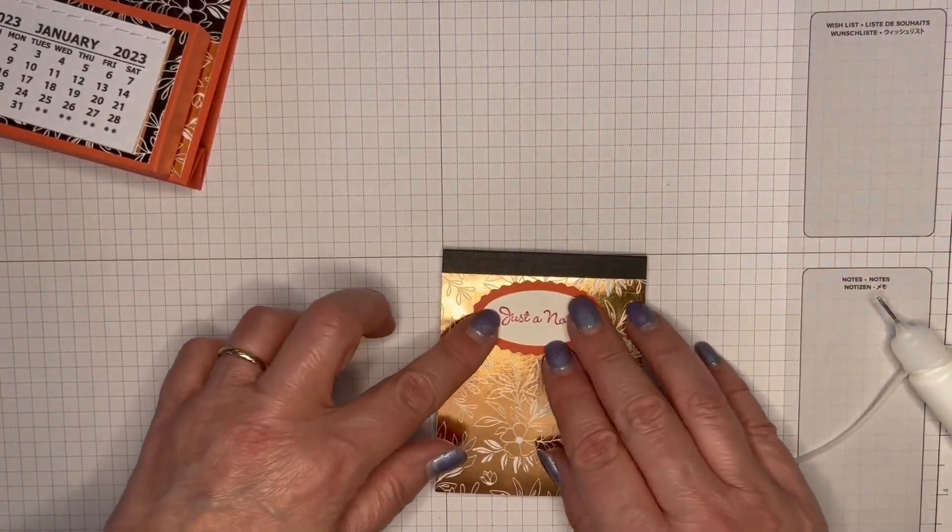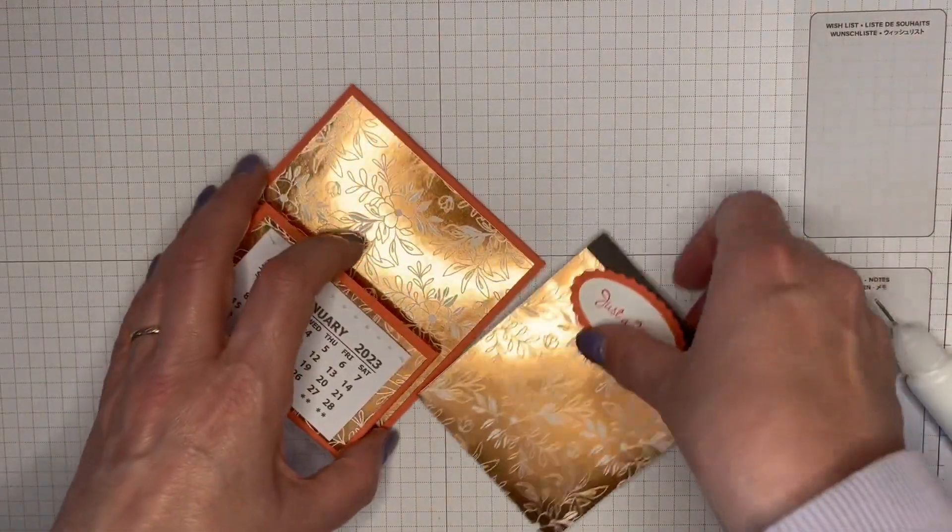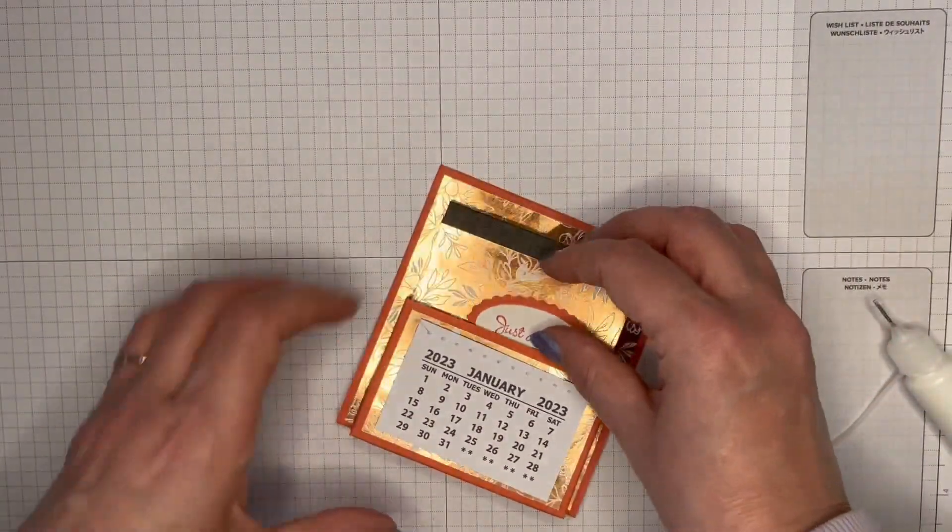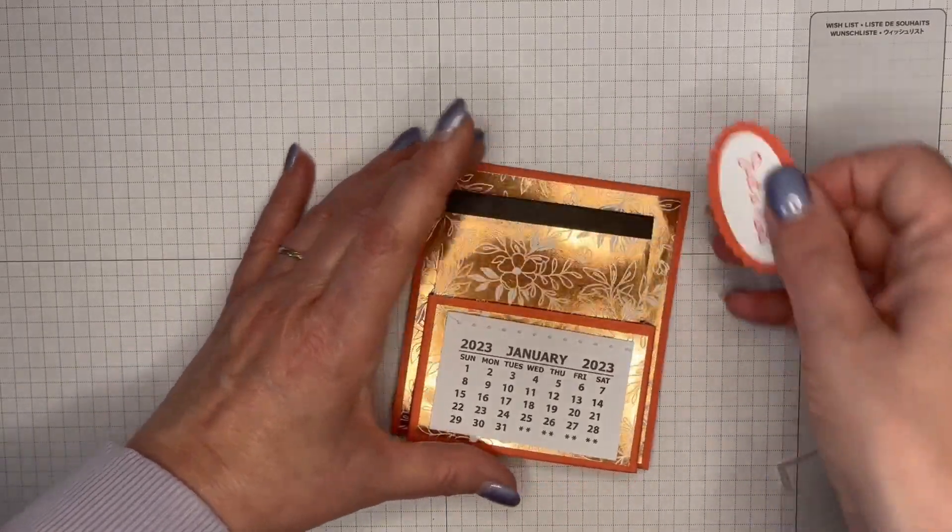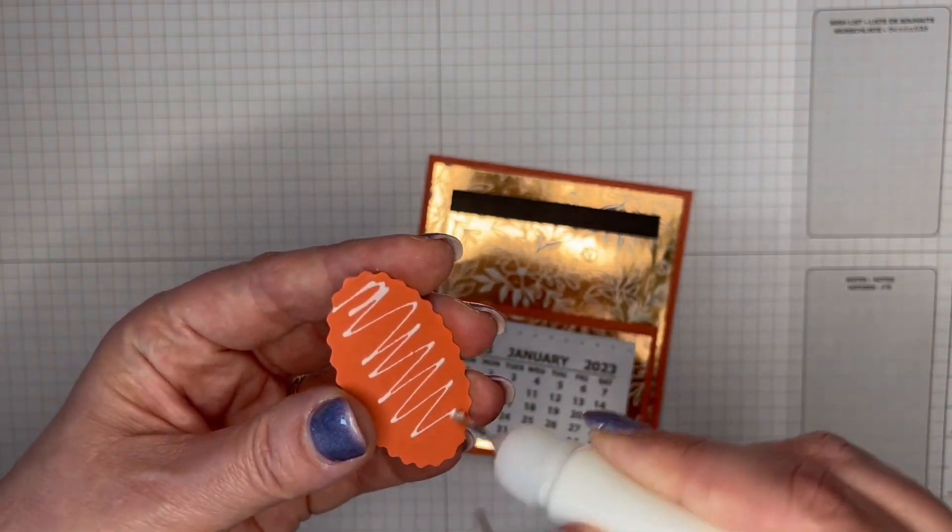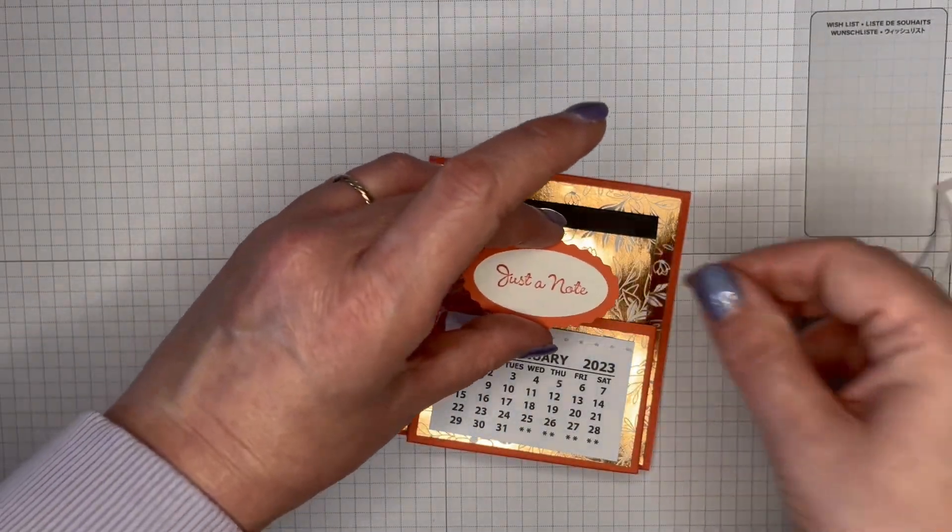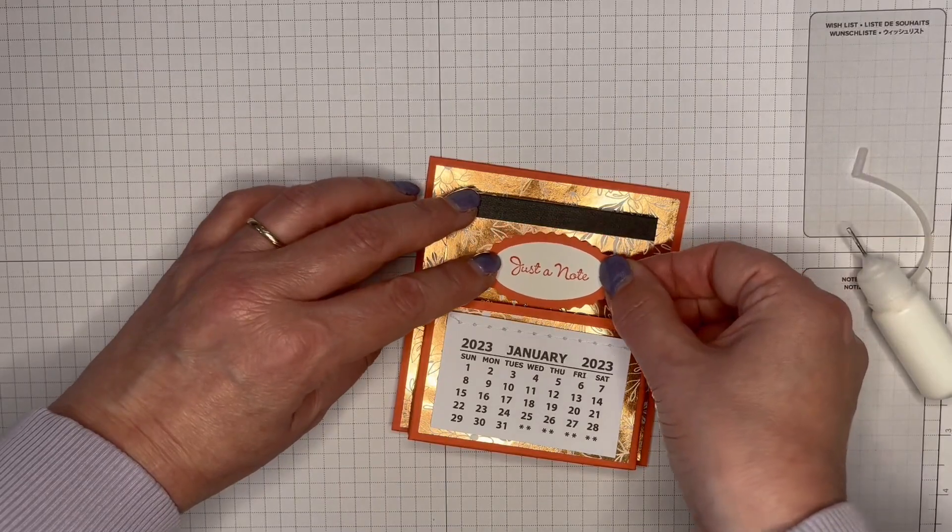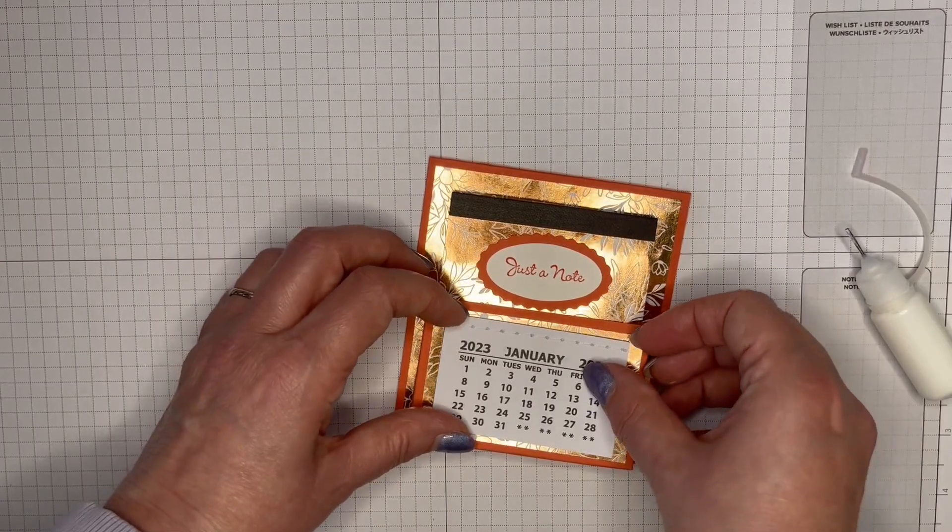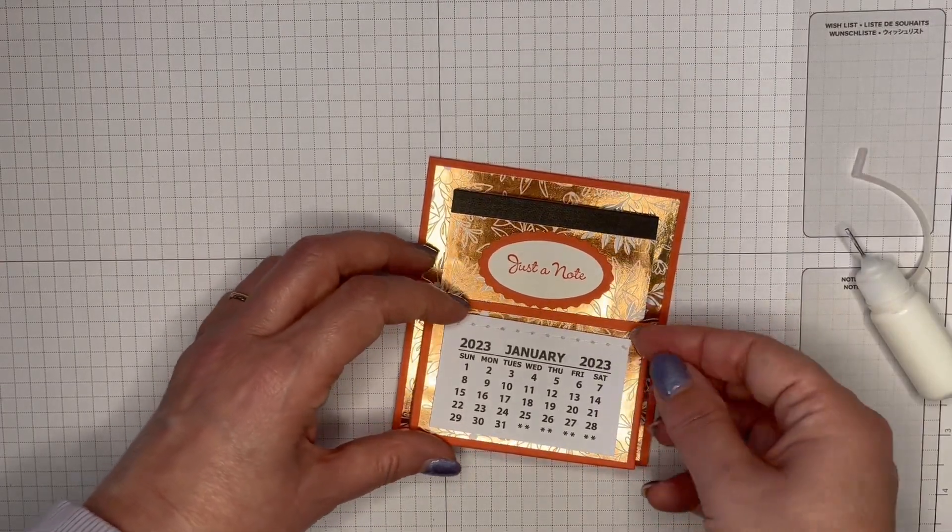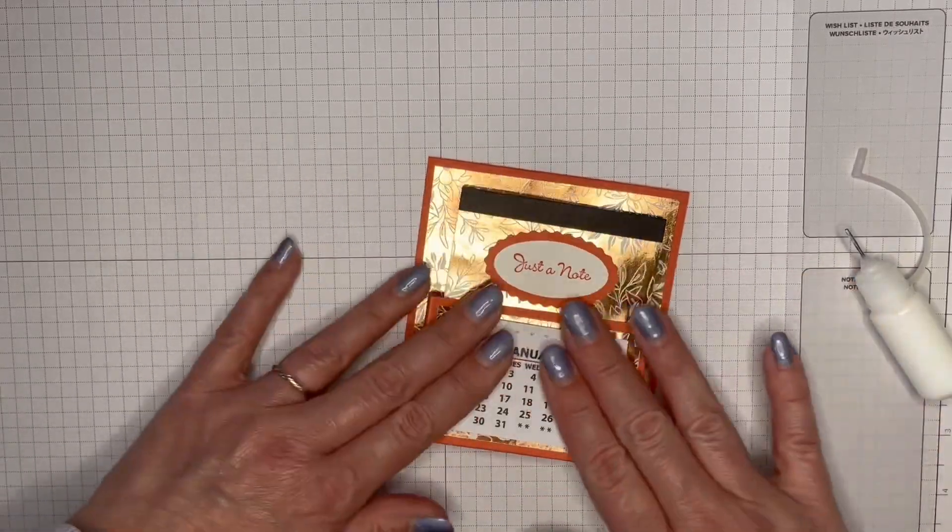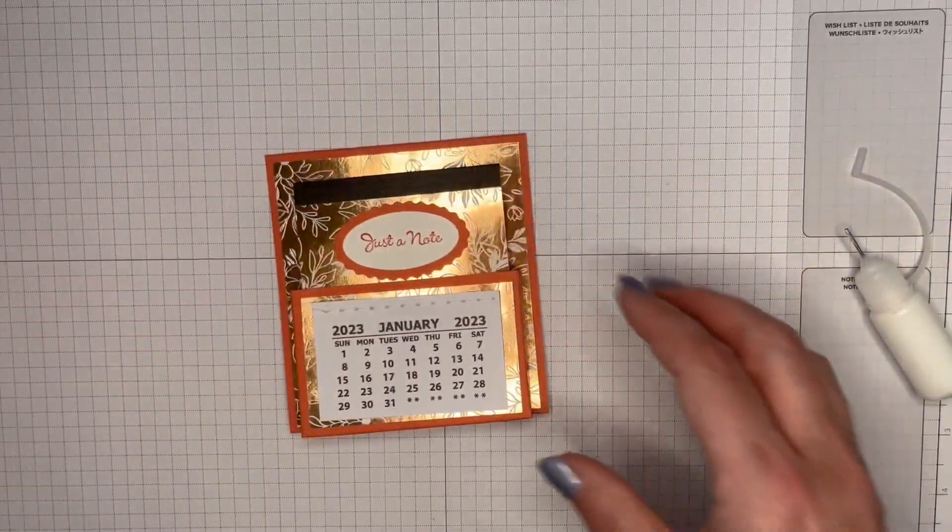And then I want to put that quite high up because I want it to be seen when my notebook is right down at the bottom. So you might even want to put your notebook in first. And then pop that on there. Just notice how skewed my calendar is, but never mind. Too late. But there we are, quick and easy.